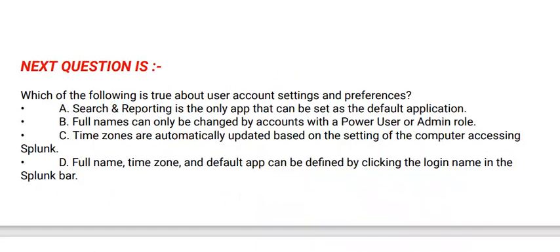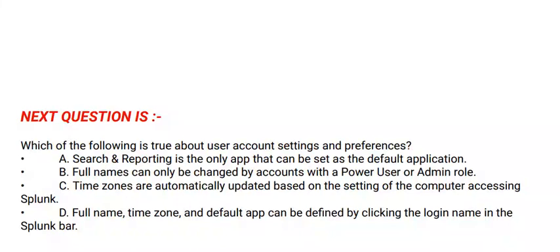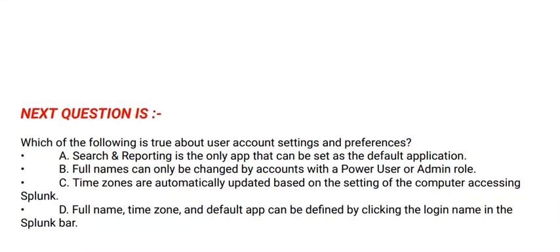The correct option is Option C. Next question is: which of the following is true about user account settings and preferences? Options are: Option A: Search and Reporting is the only app that can be set as the default application. Option B: Full names can only be changed by accounts with a Power User or Admin role. Option C: Time zones are automatically updated based on the setting of the computer accessing Splunk. Option D: Full name, time zone, and default app can be defined by clicking the login name in the Splunk bar. The correct option is Option D.